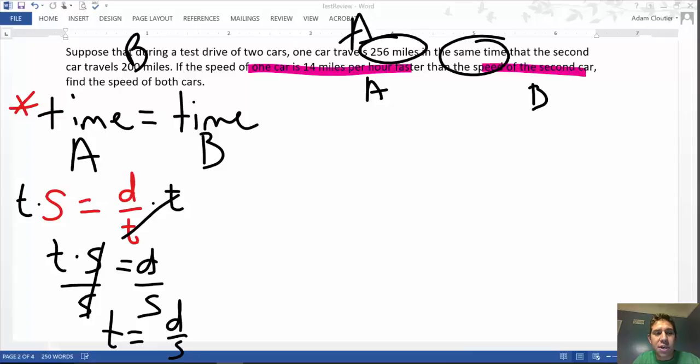That is what we will use inside our time equals time equation. So again, time equals time. We're looking at A and B here. So I'll say A and B. And I will substitute in distance over speed equals distance over speed.